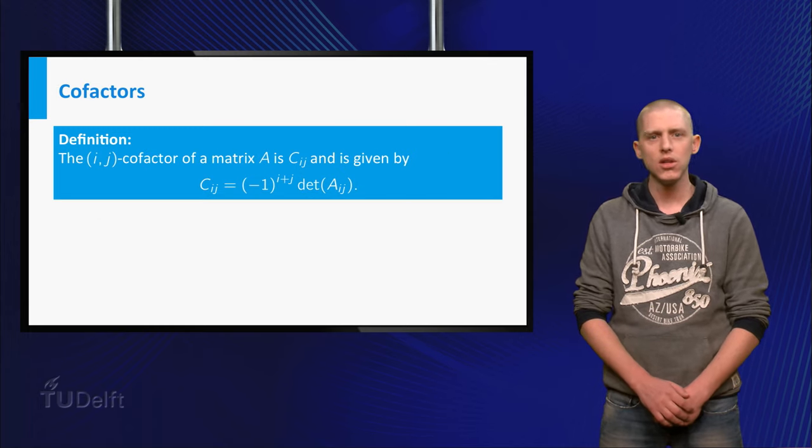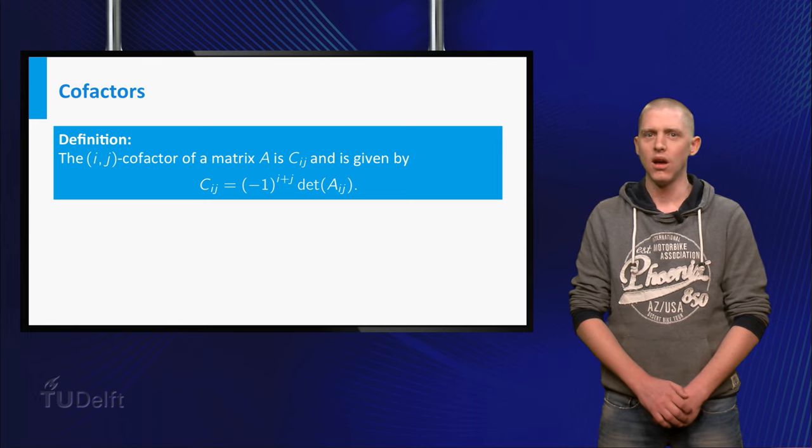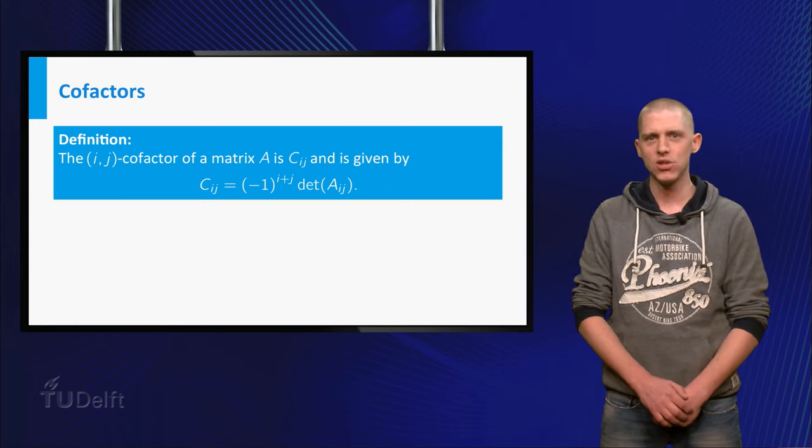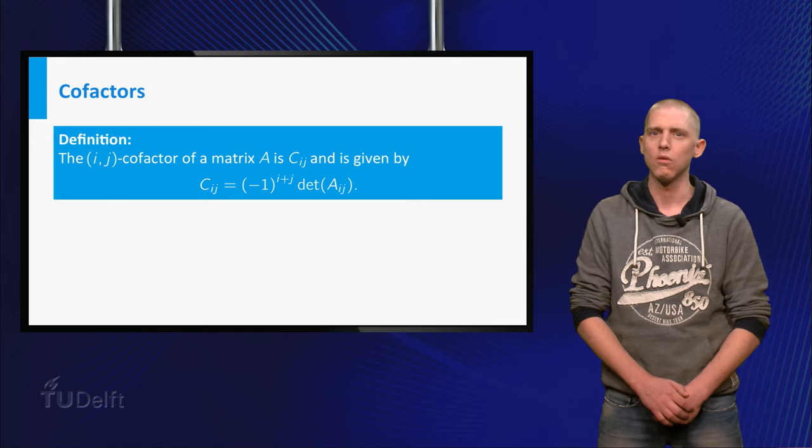Now we can define the ij cofactor Cij of A as minus 1 to the power i plus j times the determinant of Aij.